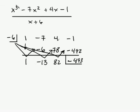So my new answer is going to be 1 degree less. Since I have x cubed, it's going to start with an x squared. So the first coefficient is going to be a 1, so that's just going to be x squared minus 13x plus 82. And you're going to get one of two answers. You can either write minus 493 over x plus 6, like this. Minus 493 over x plus 6.